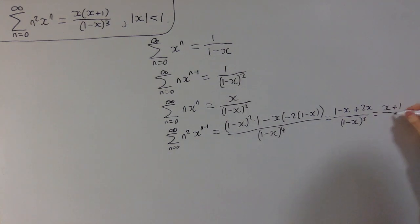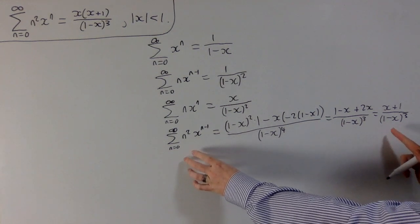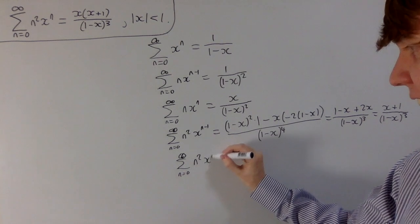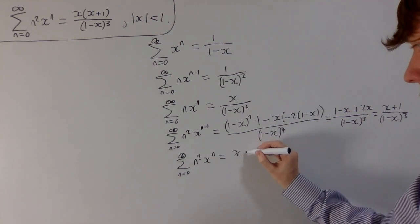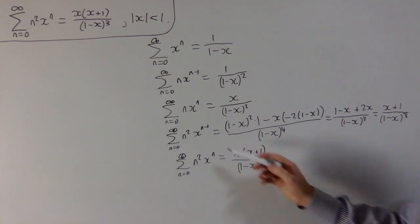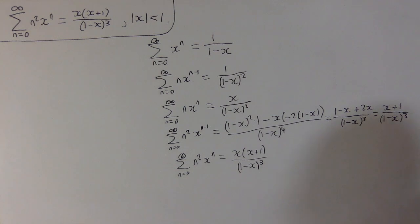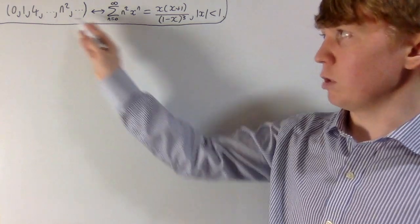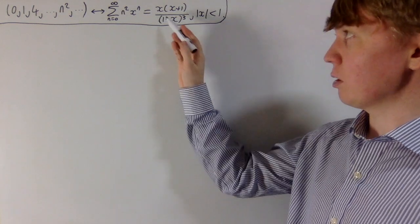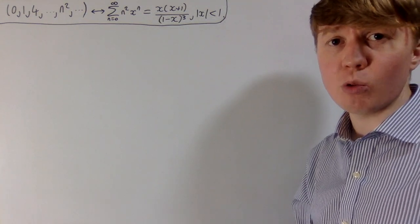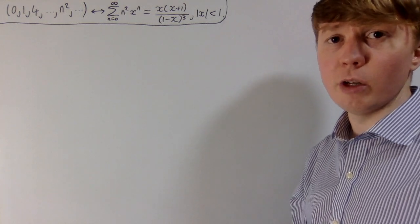Then multiplying both sides by x gives the sum from n=0 to infinity of n²·xⁿ equals x(x+1)/(1-x)³. This is the most logical way to show these are equivalent within a suitable radius of convergence. What we've done is really interesting: we've managed to encode an infinite sequence of numbers using a really simple function. You call this function the generating function — or ordinary generating function — for this sequence of numbers.